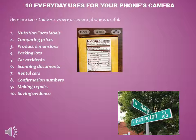Product dimensions — if you're shopping for furniture, shelves, or appliances, it's best to measure the space before going to the store. But if you forget, you can take a picture of the item's dimensions on the front or back of the box and then measure the space when you get home. This is usually easier than buying it and having to return it, especially if it's a large or heavy item.